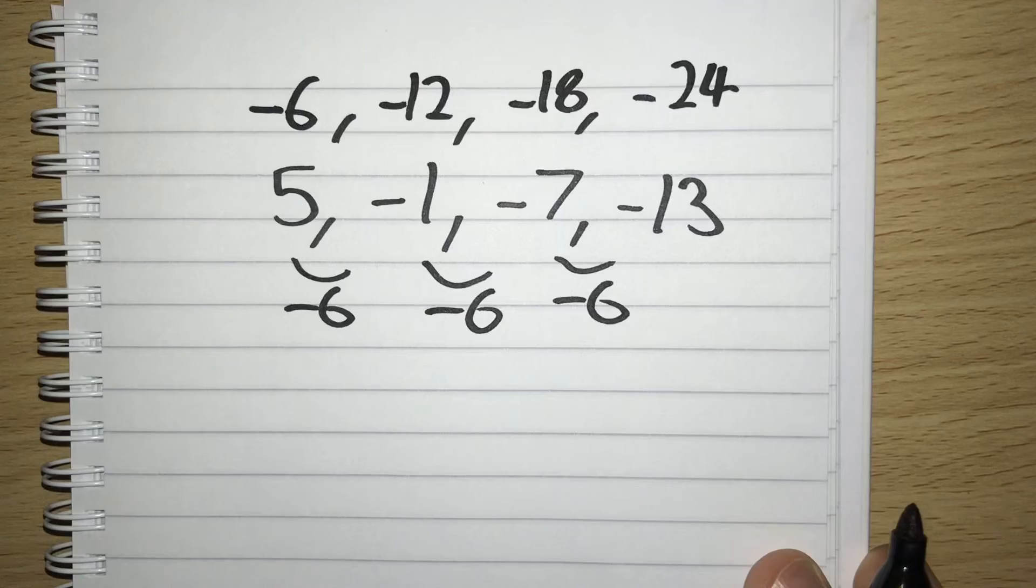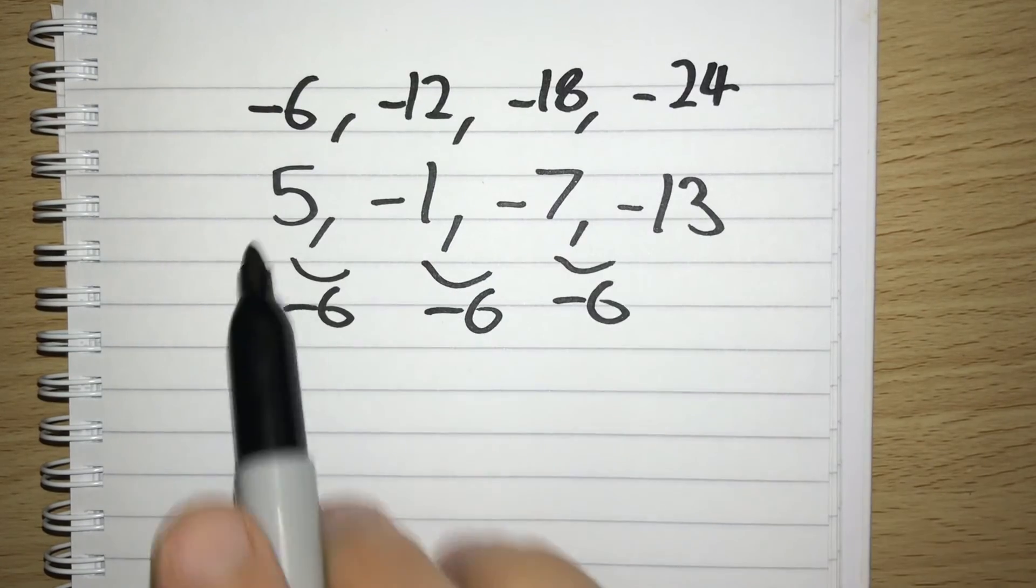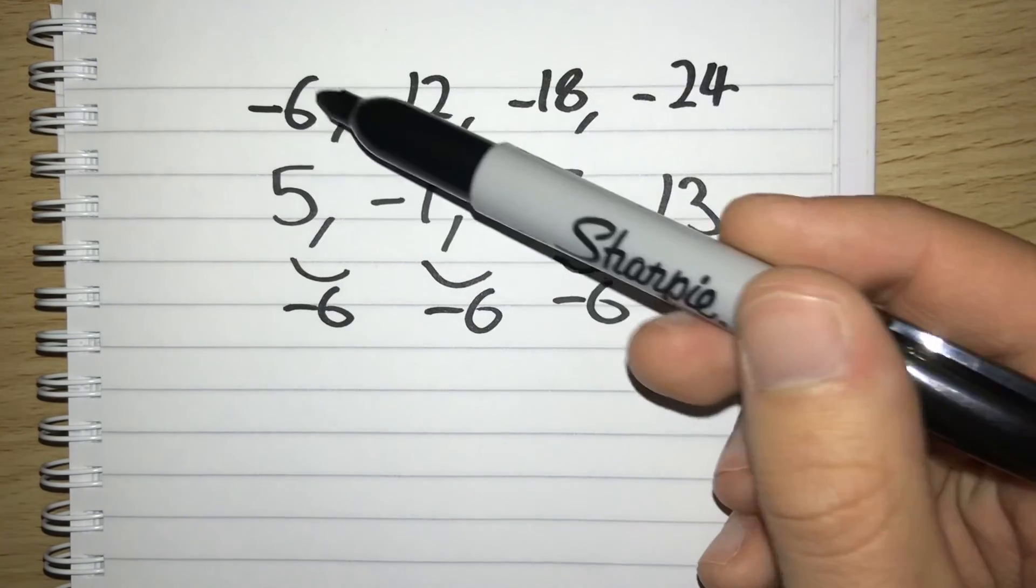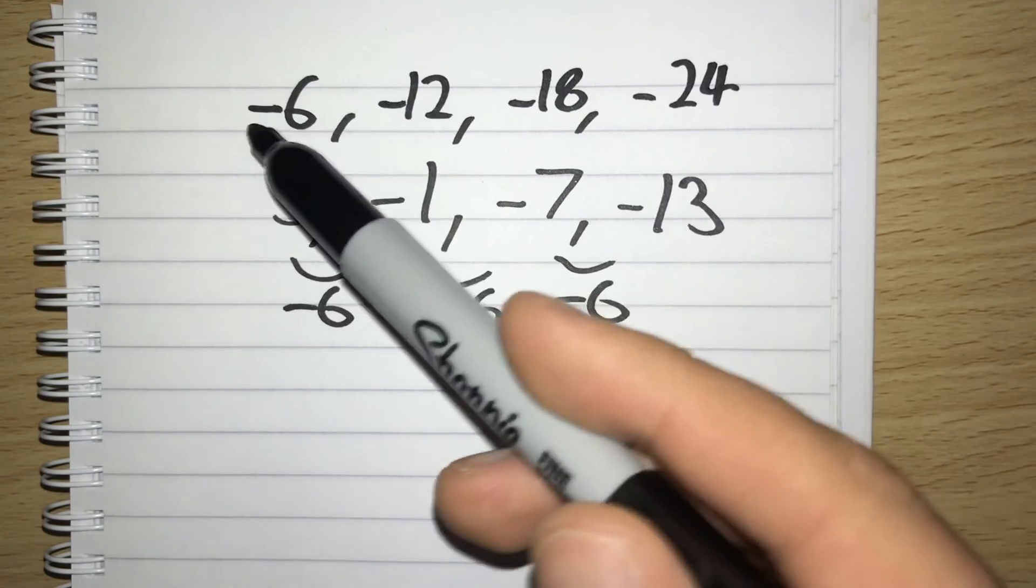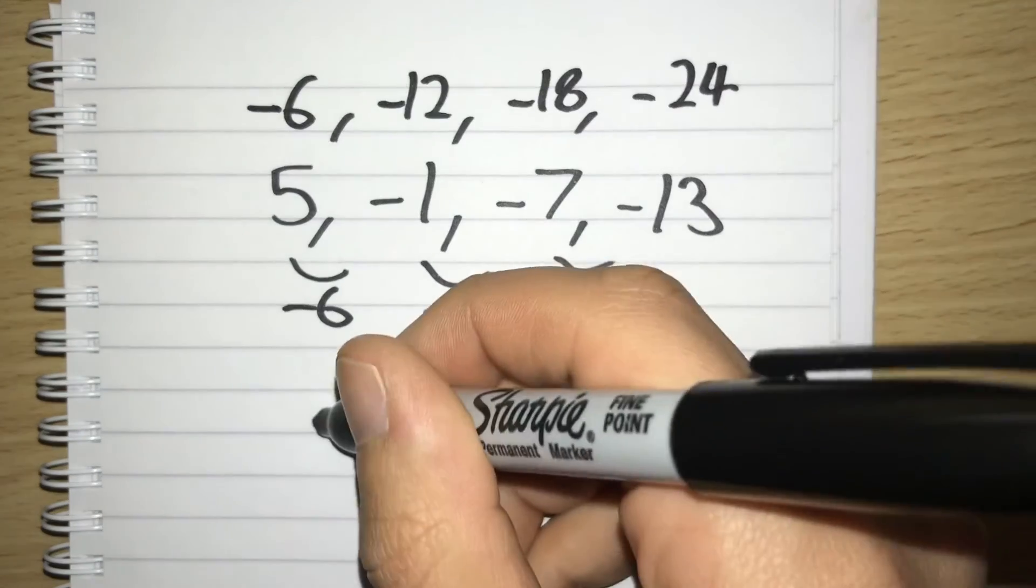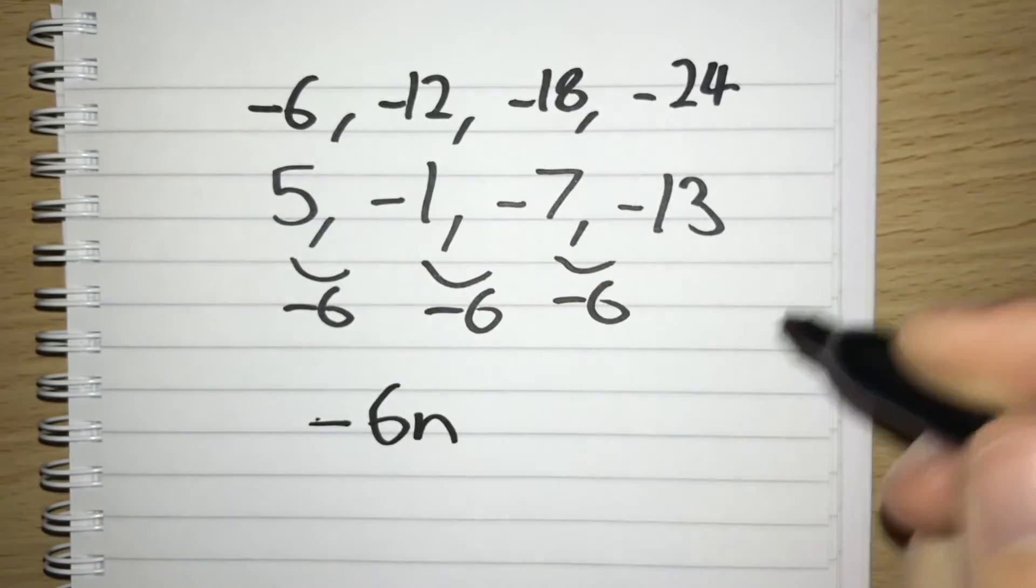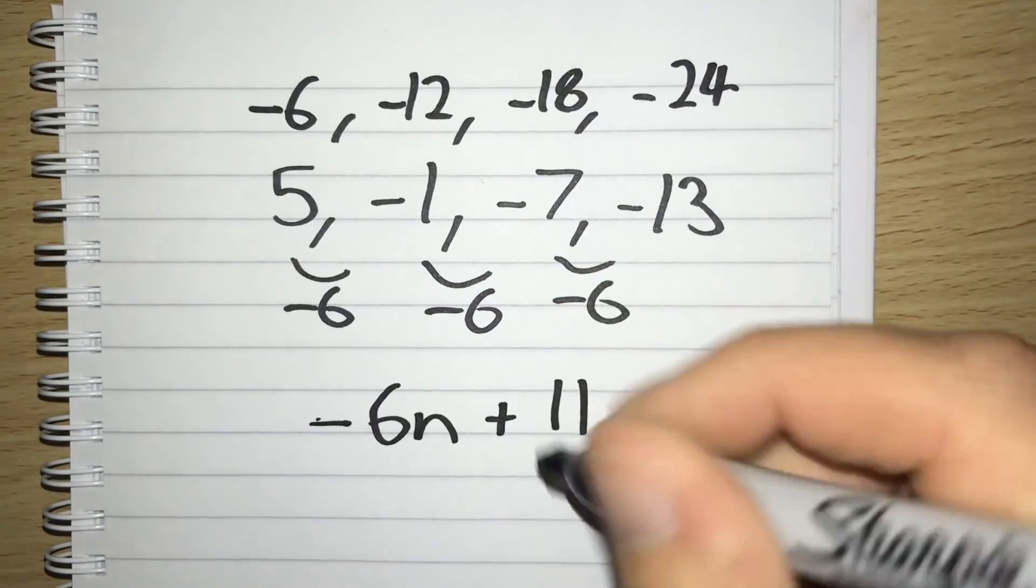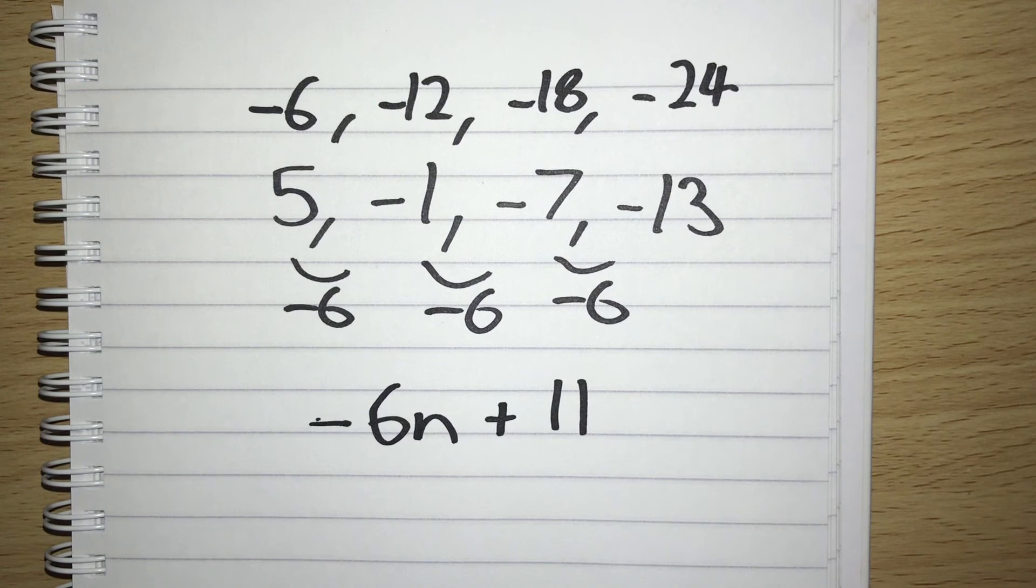What do we need to do to go from this negative 6 times table up to the sequence we've got? From minus 6 up to 5, we're going to go up 6 to get to 0, up another 5 to get to our 5. So we're going up 11. So we're going to have minus 6n plus 11. And that's going to be our answer.